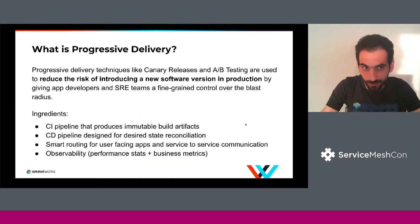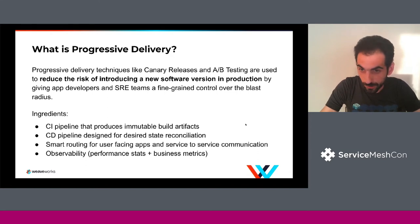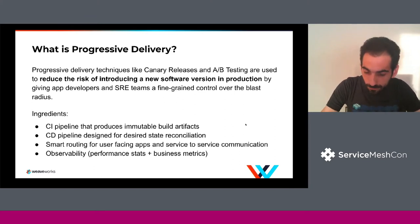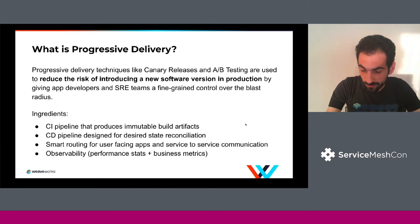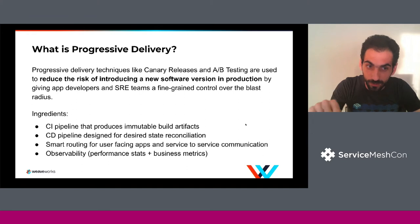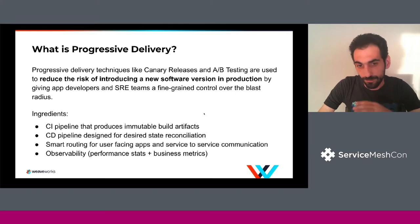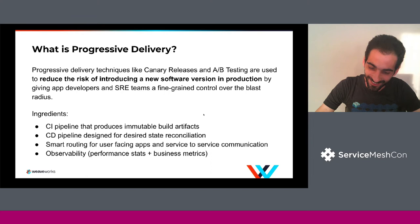So what is progressive delivery? It's an umbrella term for various deployment techniques. The end goal is to reduce the risk of introducing a new software version in production — it's that simple. It's built upon continuous delivery. One of the key ingredients of progressive delivery is the ability to segment your user traffic and route layer 7 traffic between versions of the same application. Another key ingredient is the ability to observe the impact of live traffic onto new releases.